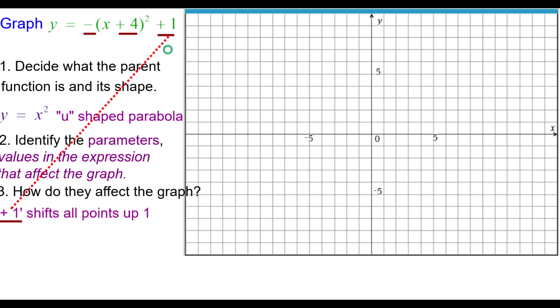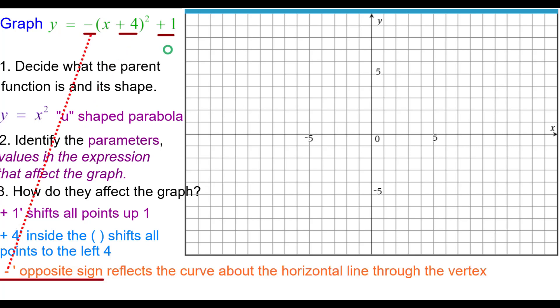How do they affect the graph? Plus 1 shifts all the points up 1. Plus 4 inside the parentheses shifts all points to the left 4. And the opposite sign reflects the curve about the horizontal line through the vertex. Also takes the opposite of each of the y values.